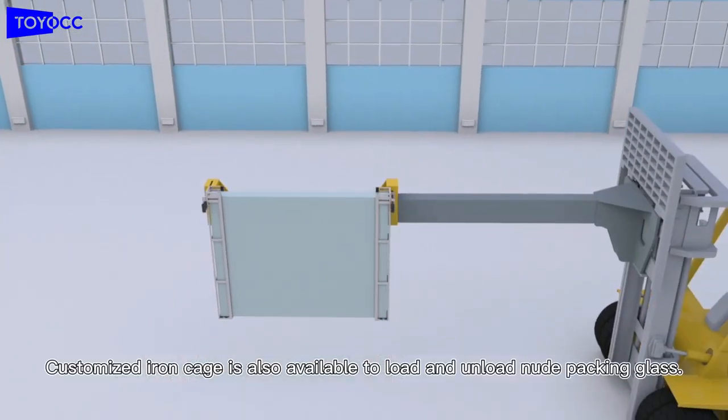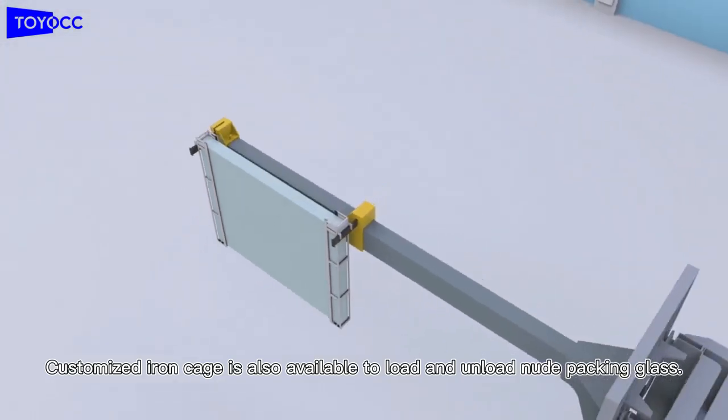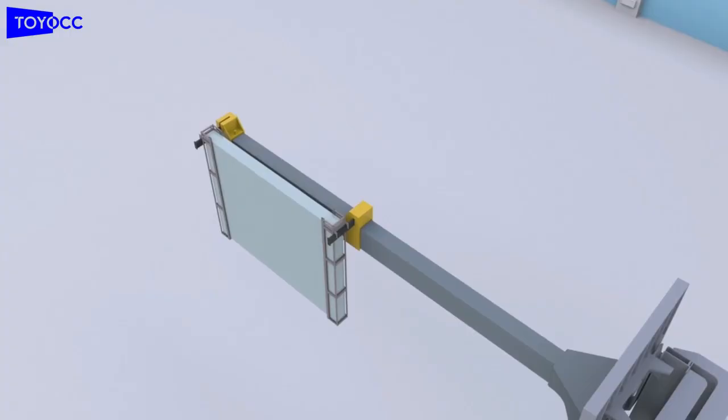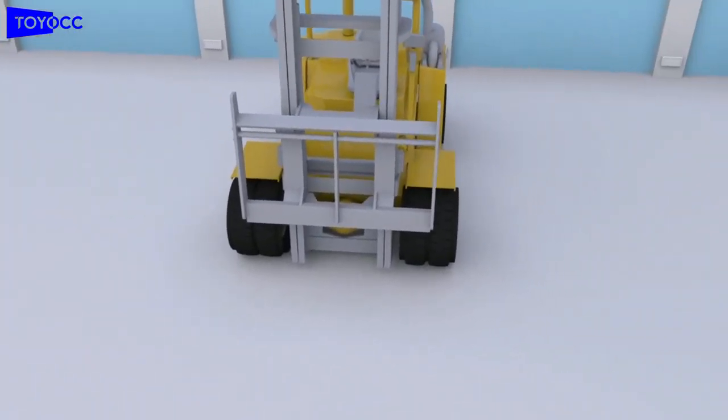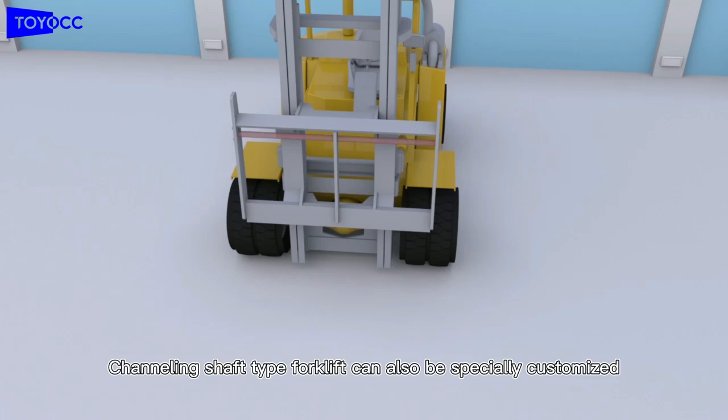Customized iron cage is also available to load and unload non-packing glass. Channeling shaft top forklift can also be specially customized.